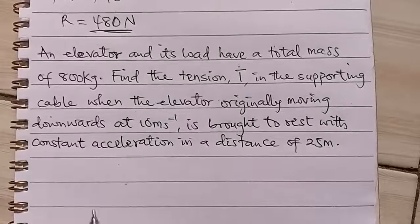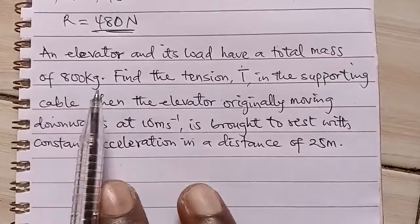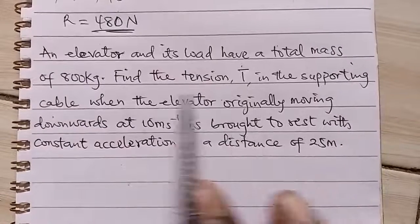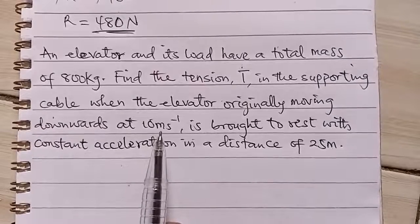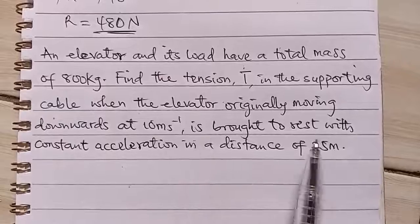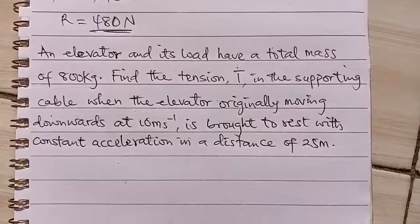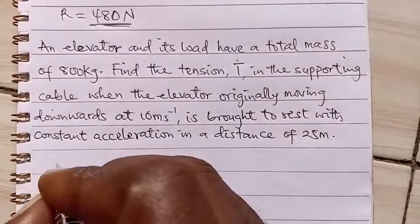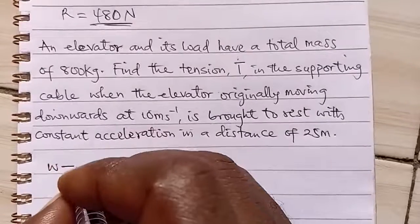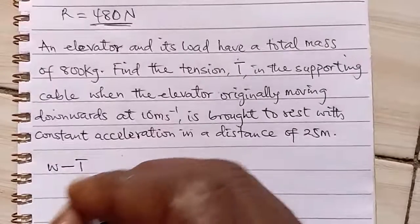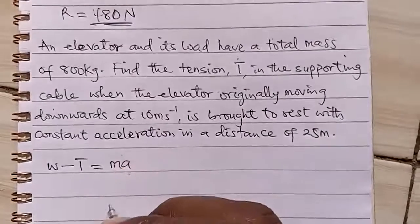So let's look at the second question. This question says an elevator and its load have a total mass of 800 kg. Find the tension T in the supporting cable when the elevator originally moving downwards at 10 meters per second is brought to rest with constant acceleration in a distance of 25 meters. Now, first of all, let's note that for this to be going down, it means that W minus the tension, the weight minus the tension, it will be greater than the tension. So weight minus tension gives us the force as ma.